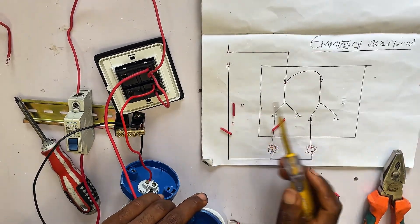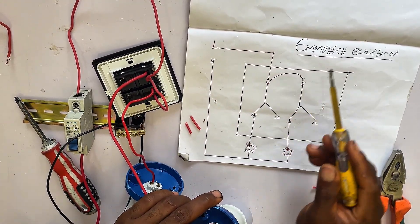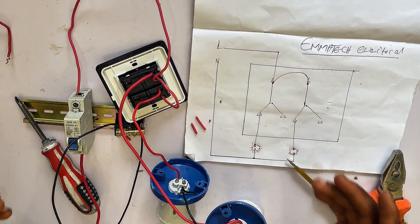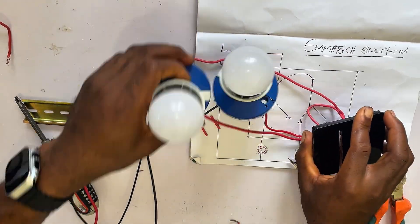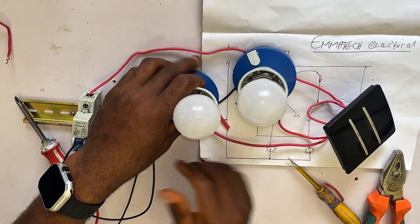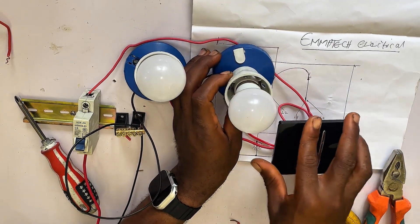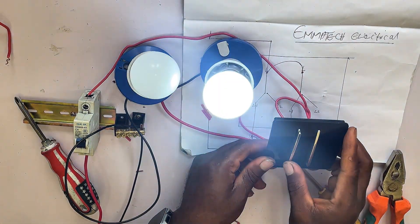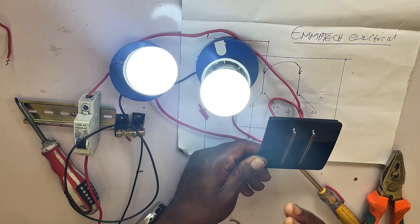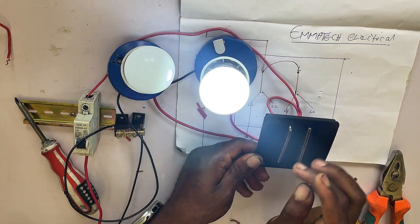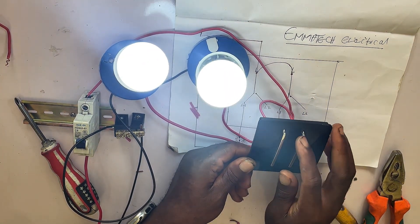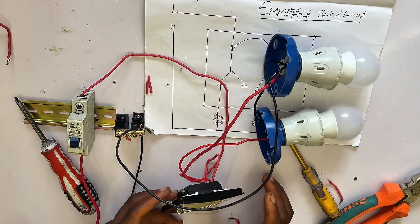Remember, if you need this diagram drop a comment in the comment section and I'll send the diagram to you. We are now done with the connection so let's test it. Please subscribe to my YouTube channel and follow us for more videos like this. I'll turn my breaker on — you can see this one is on and the second one is on. This is off and the second one is off. This is how to do the connection — it's very simple. Don't forget to subscribe to the channel. Thanks.